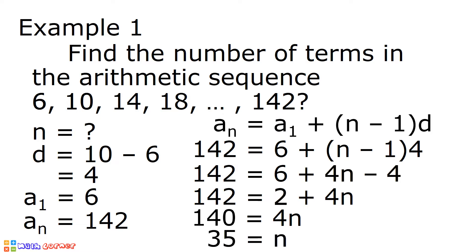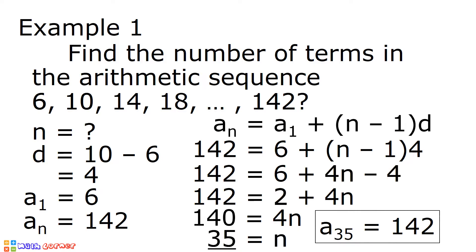And the value of n is equal to 35. It means that there are 35 terms in the arithmetic sequence 6, 10, 14, 18, up to 142. And it also means that the 35th term is equal to 142.